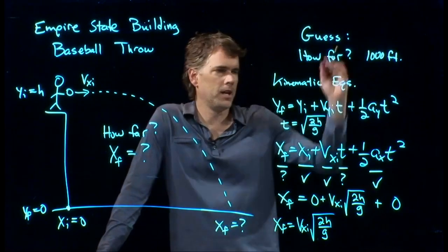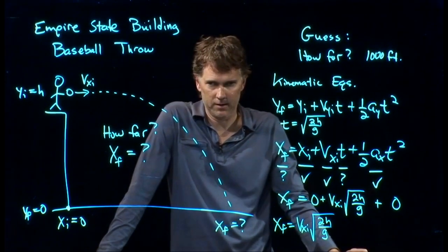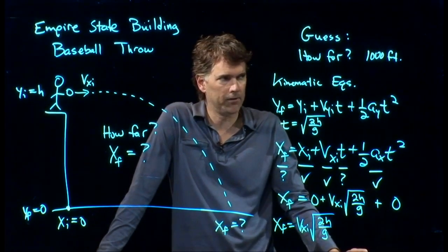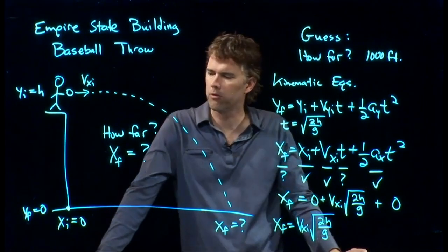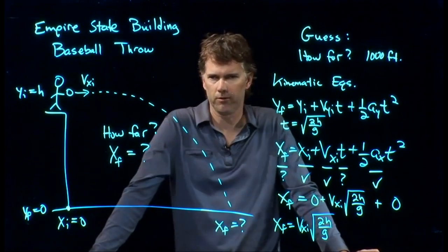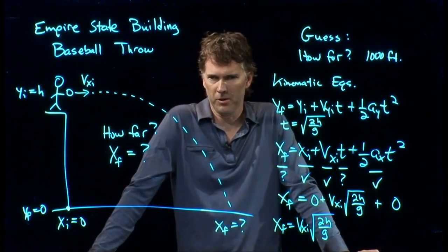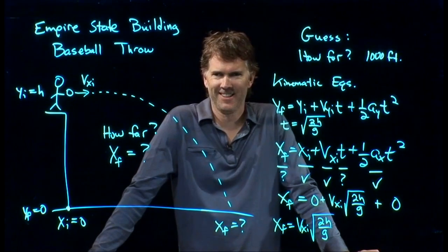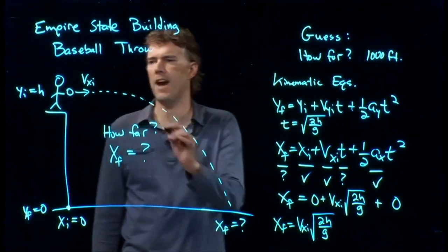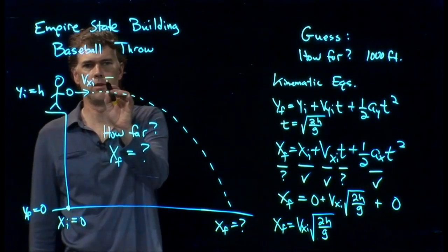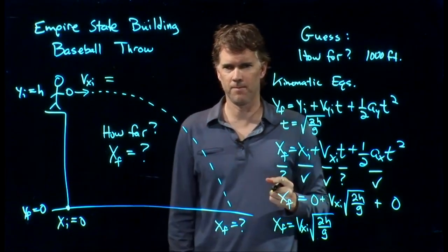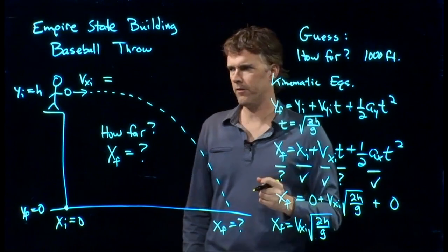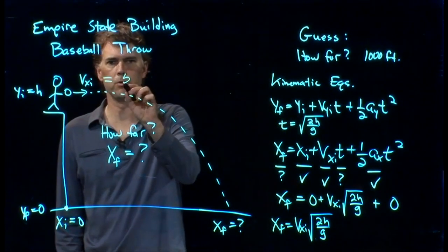Now, we took a guess of 1,000 feet. Why did we guess 1,000 feet? Because we said, well, the building's maybe 1,000 feet high, so maybe we can throw it out 1,000 feet this way. So are you a baseball player by any chance? Used to be? Alright. What was your fastest throw that you've ever been able to do? About 55 miles an hour. Okay. That's pretty fast, actually.